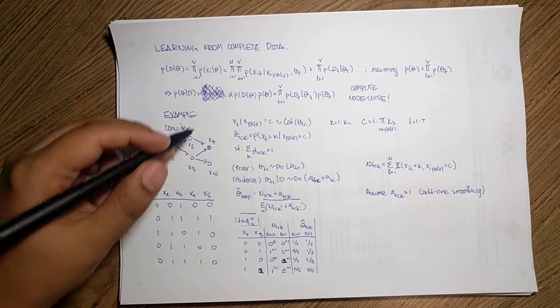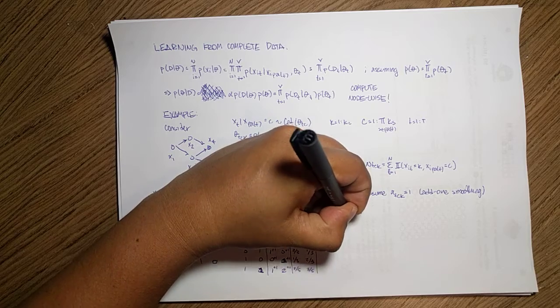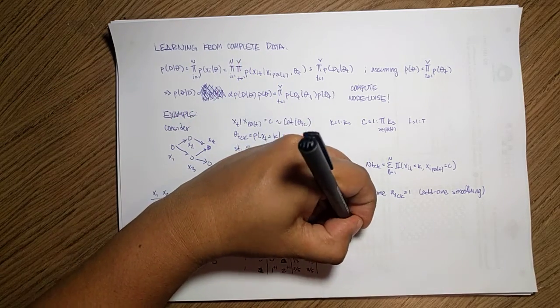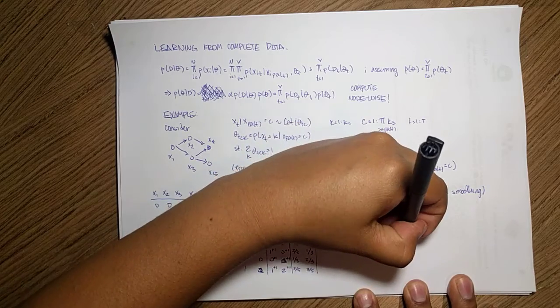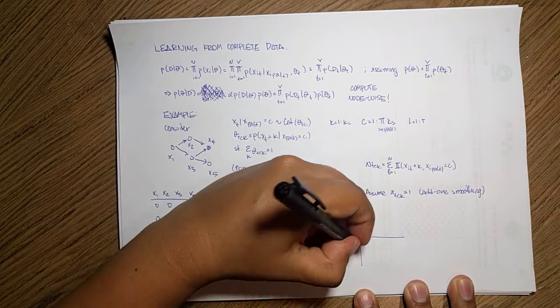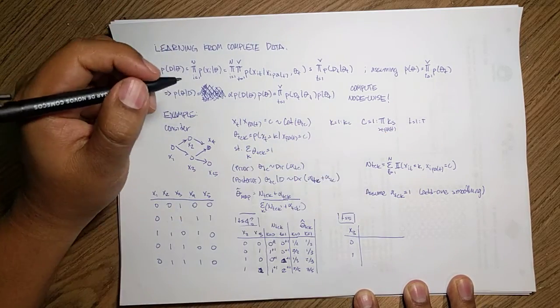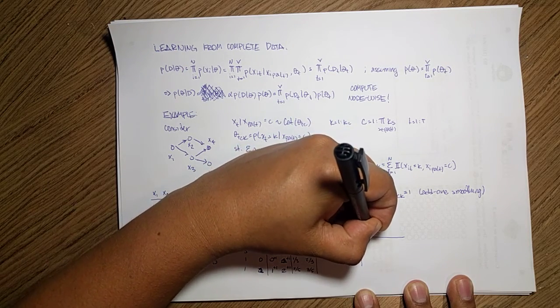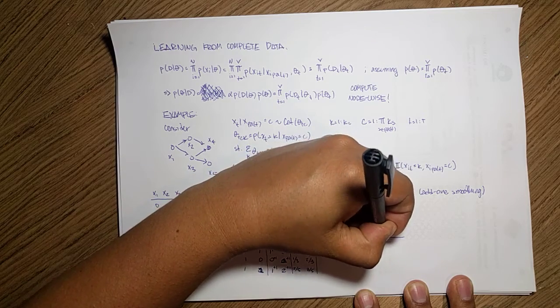And we can do one more if you want. So we can compute, for instance, what will happen for T5. And T5 is easier because it just depends on three. So for the count of three, three just has zero and one as the possible values. So now I can do my TCK, my NTCK and just count for K equals zero and for K equals one.